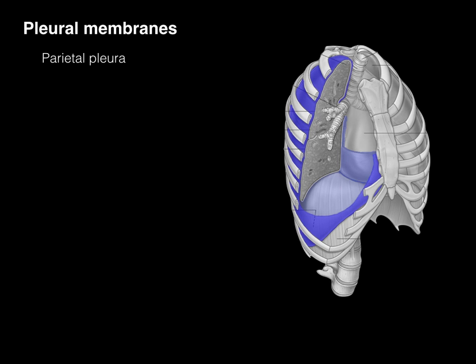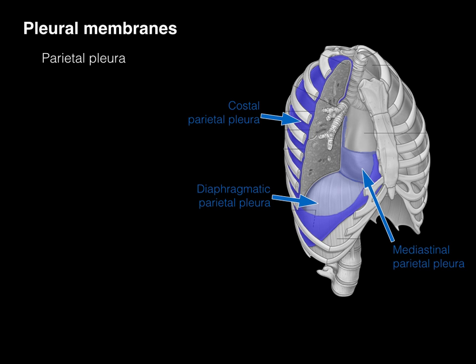The parietal pleura is outlined on the right lung in this oblique step dissection view — everything in blue is parietal pleura. Anatomists have named the different parts: the part lining the internal surface of the ribs is costal parietal pleura; the part lining the top dome of the diaphragm is diaphragmatic parietal pleura; the part by the mediastinum near the heart is mediastinal parietal pleura; and the part projecting up into the neck is cervical parietal pleura — all mesothelium, named by location.